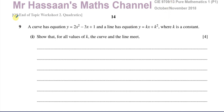This is also question 9 from my end-of-topic worksheet on quadratics from my P1 collection from Cambridge. It says a curve has equation y equals 2x squared minus 3x plus 1, and a line has equation y equals kx plus k squared, where k is a constant. First of all, show that for all values of k, the curve and line meet.